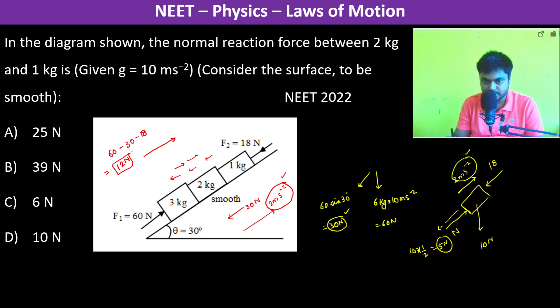Therefore, we can write a quick equation: N minus 18 minus 5 should be equal to ma, which is 1 kg into 2 meter per second square. So therefore, N minus 23 should be equal to 2, so therefore N is equal to 25 newtons. Therefore, A is going to be the answer.